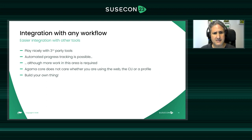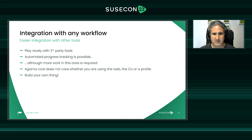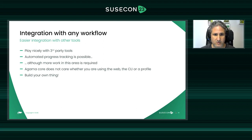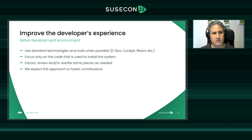The second key point is integration with any workflow. We want Agama to play nicely with third-party tools so you can integrate the installation process into whatever workflow you're using. We've improved how we report installation progress — with YaST it was tricky; now we can report events and installation status through the CLI or D-Bus API. At the end of the day, Agama has a unified API that you can build on regardless of how you start the installation.